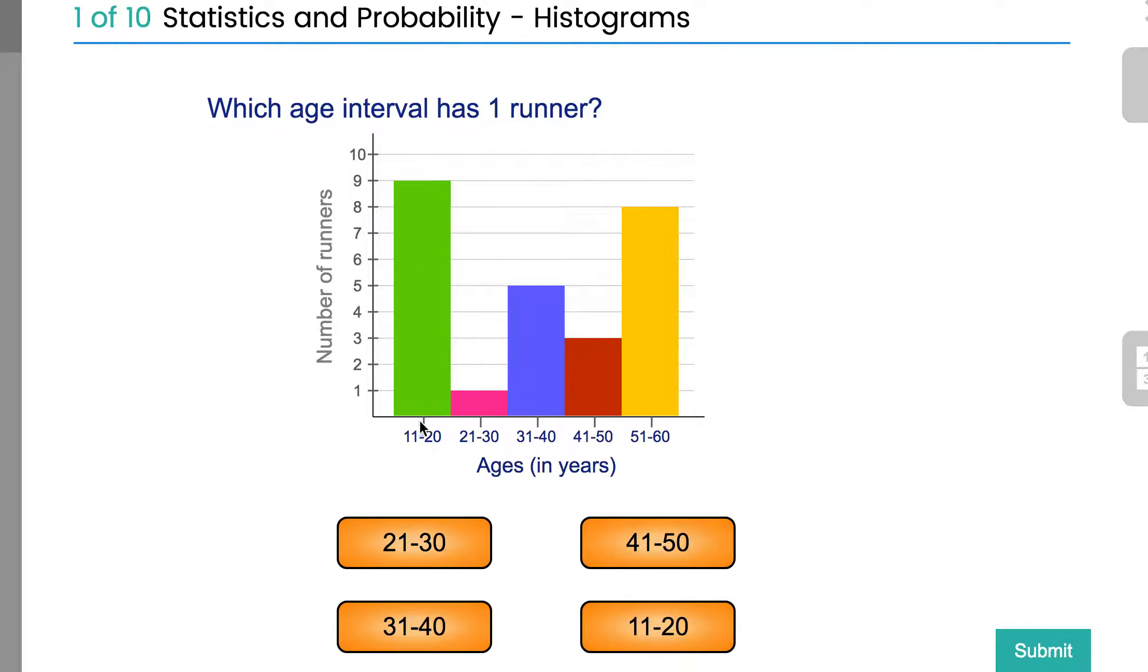Like 11 years or 12 years, it puts the categories over a range of ages or amounts, and sometimes they call that an interval. So in this one, it says which age interval has one runner, and of course you can see it's the 21 to 30 age range.